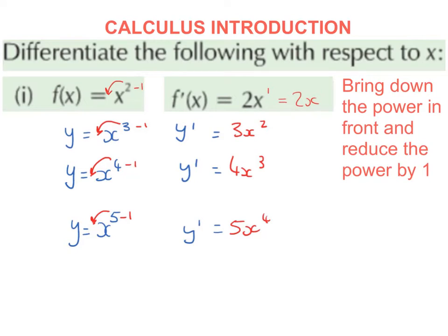In our next example we have the function equaling x to the power of 5. Again we bring down the power in front, so we end up with 5x, and we reduce the power by 1. 5 take away 1 is 4, so the derivative is going to be 5x to the power of 4.